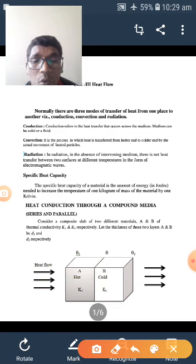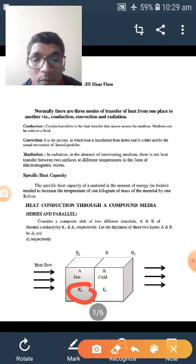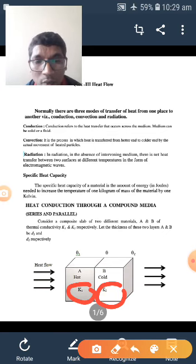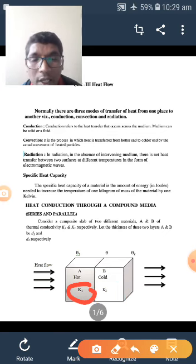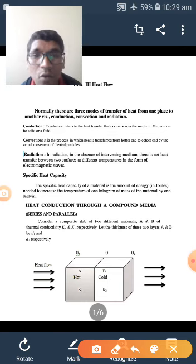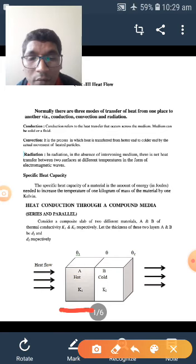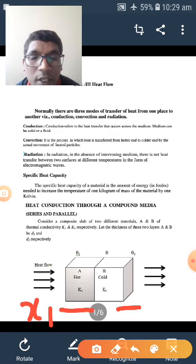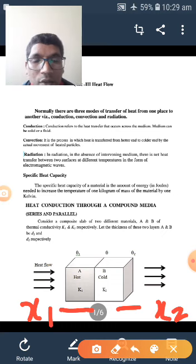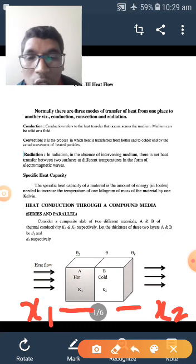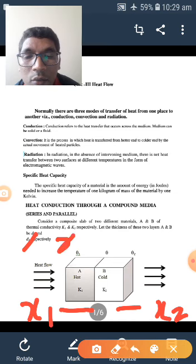Since there are two materials a and b, the coefficient of thermal conductivity for a is k1. Similarly for material b is k2. This means the compound media is made up of two different materials having two different coefficients of thermal conductivity k1 and k2. The thickness of slab a is taken as x1 and the thickness of slab b is taken as x2, even though it is given as d1 and d2. This has to be changed to x1 and x2 respectively.